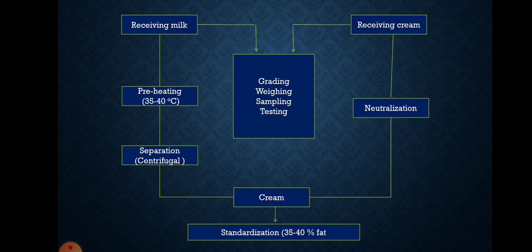The whole milk is preheated at a temperature of 35 to 40 degree Celsius. After preheating, this milk is passed through the centrifugal separator, which separates the cream and skim milk. The desired raw material for butter manufacturing — cream — is obtained and then standardized. If cream is received into the plant, it again goes through grading: first grade cream is sweet or slightly sour; second grade cream is sour and coagulated; while rejected grade cream is markedly sour and fermented.